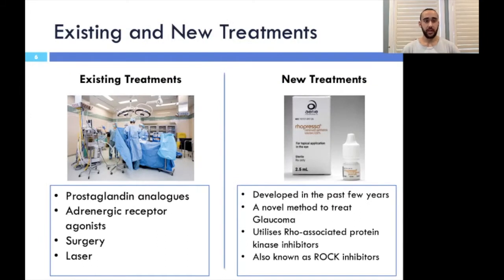Traditionally, glaucoma is treated with medications such as prostaglandin analogues and adrenergic receptor agonists that reduce intraocular pressure by relaxing smooth muscles. Another option for patients is surgery and laser, both of which drain the excess liquid and clear the blockage at the canal of Schlemm.